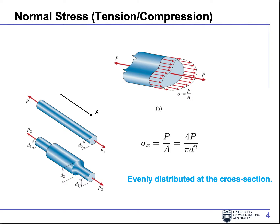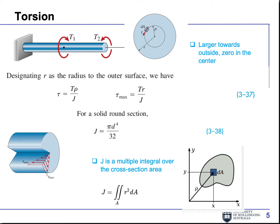For the simplest case — tension or compression — the normal stress is evenly distributed on the cross-section, equal to force over cross-sectional area, which for a circular geometry is 4P over π·D². For the second case, torsion, the stress is not evenly distributed. It is largest on the outside and zero at the center. The larger the radius, the more torsional stress you get on the surface.